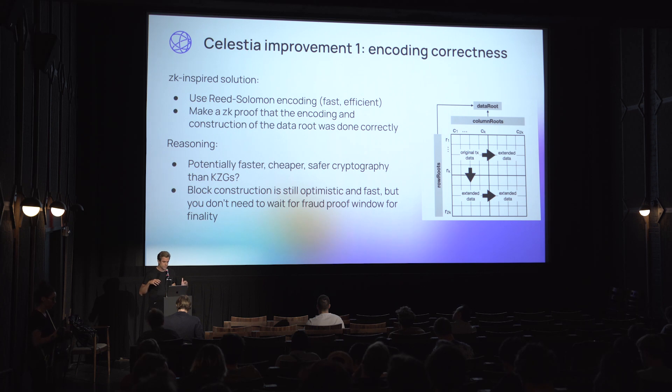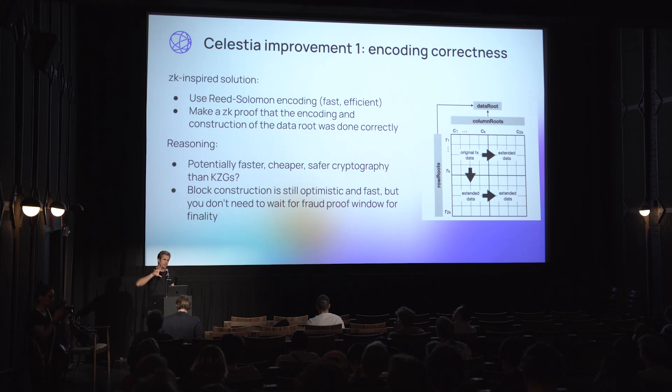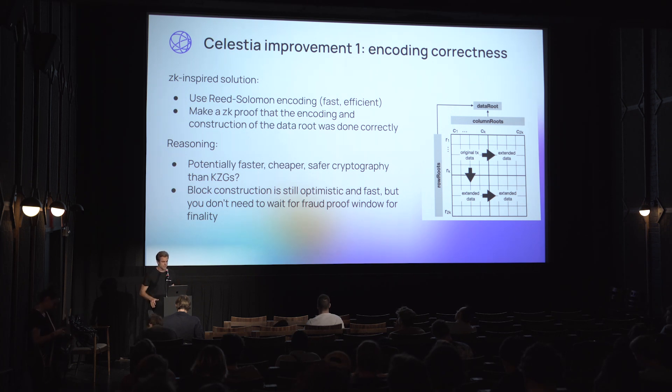The downside is that, at least in our research, KZG commitments are very expensive and slow to compute, so at least for now it doesn't seem ready for prime time. A potential solution we're thinking about is to stick with Reed-Solomon encoding but add a layer of ZK proving on top — you extend the block data in the normal way.